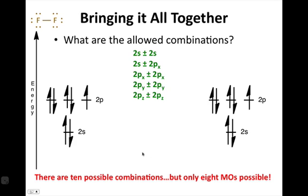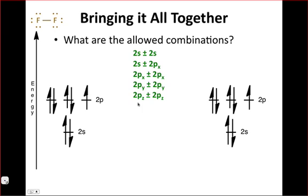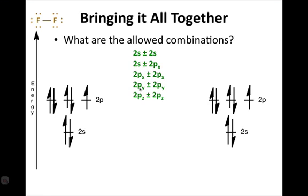The constructive and destructive combinations are listed here, hence the plus-minus in each of these cases. So there are ten combinations represented here, but we only have eight molecular orbitals that we can possibly produce.